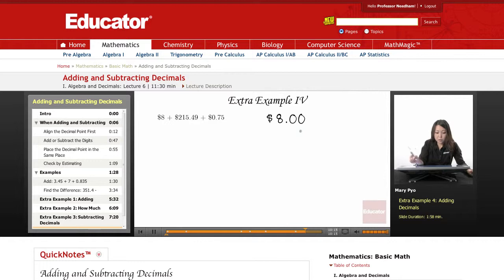And then I'm going to add $215.49. Now I'll line up the decimal point. So it's going to go 215.49. And then $0.75 here is going to be 0.75.